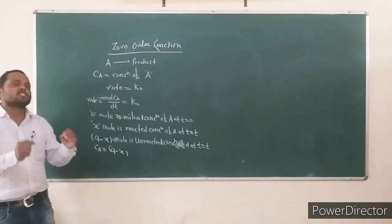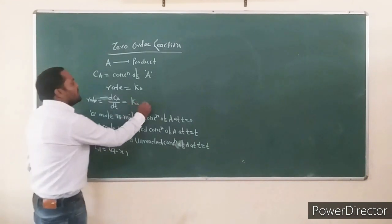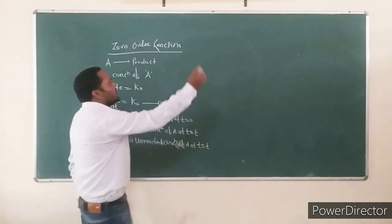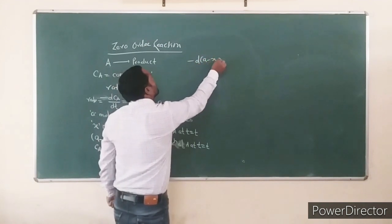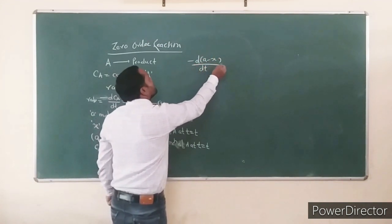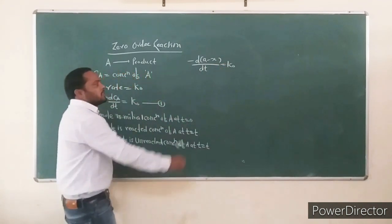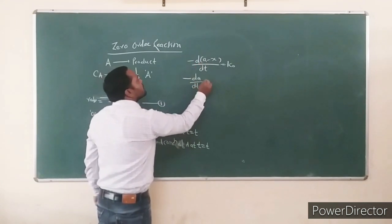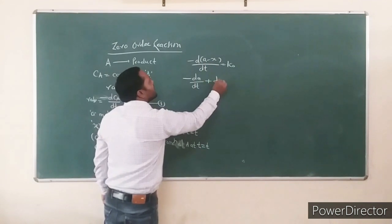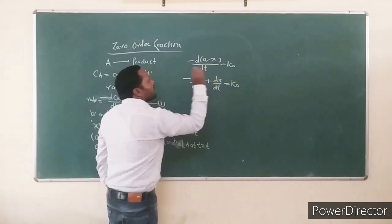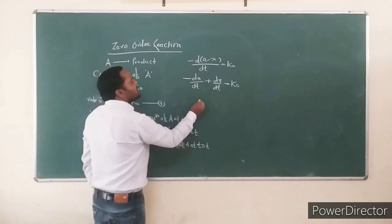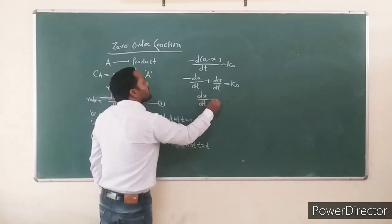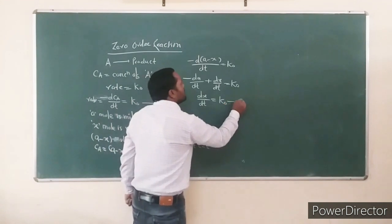The rate of reaction depends on the concentration of unreacted reactant at a particular time. CA is equal to A minus X. We substitute CA equal to A minus X into equation 1. This gives minus D(A minus X) upon DT equals K0. Solving this: minus DA upon DT plus DX upon DT equals K0. Since A is constant, DA upon DT equals zero, giving DX upon DT equals K0. This is equation 2.